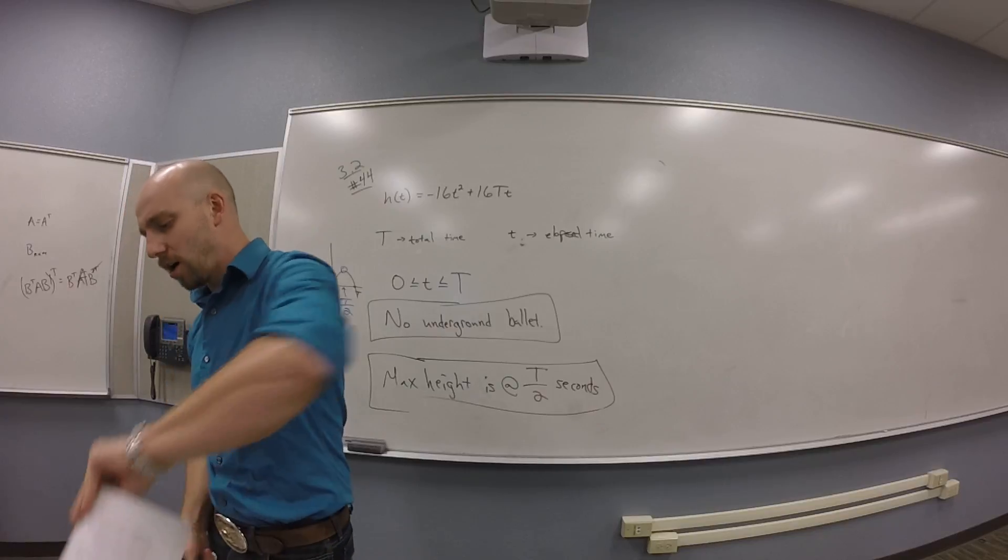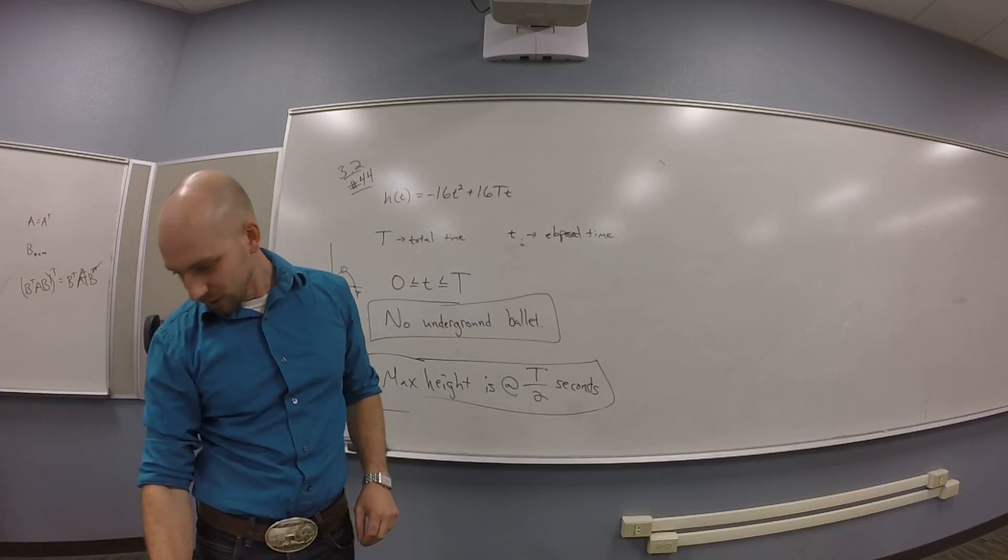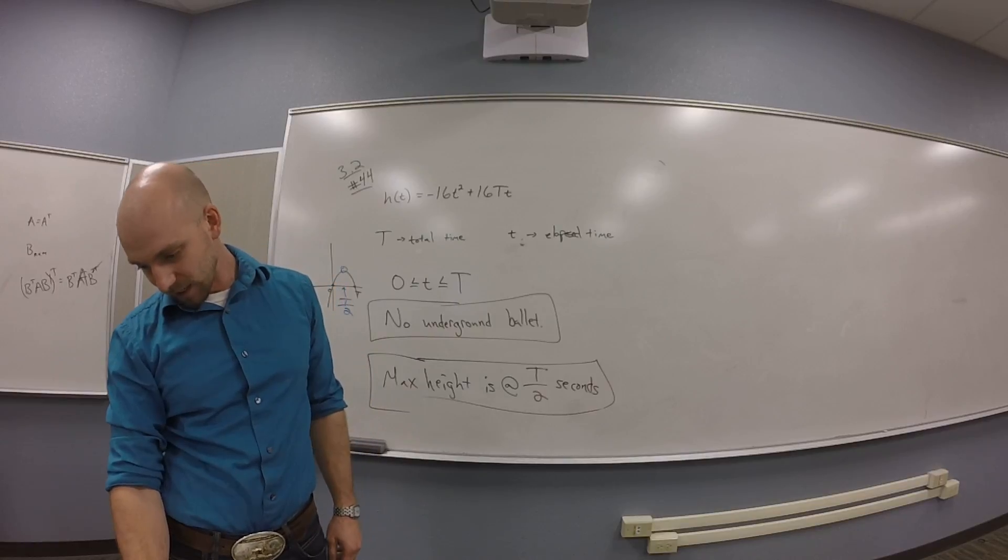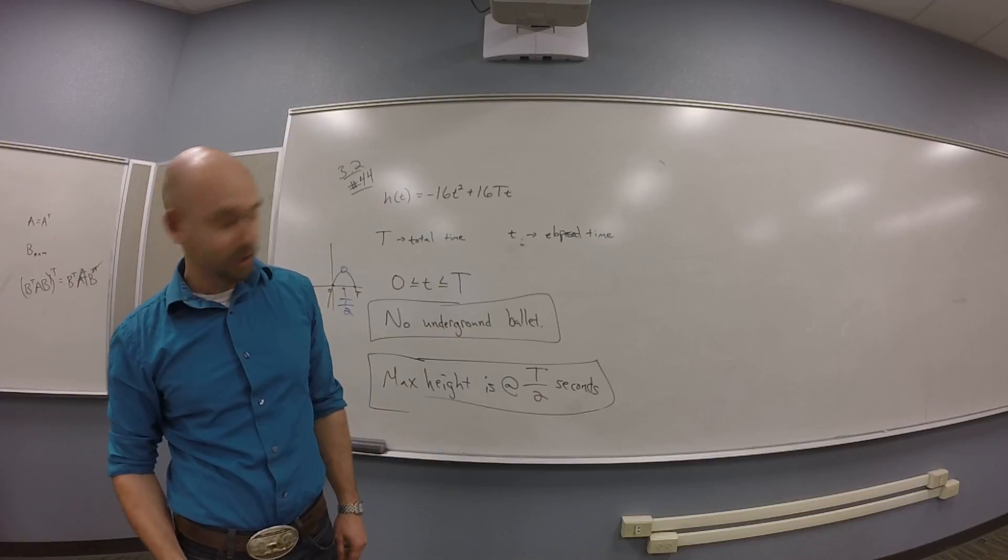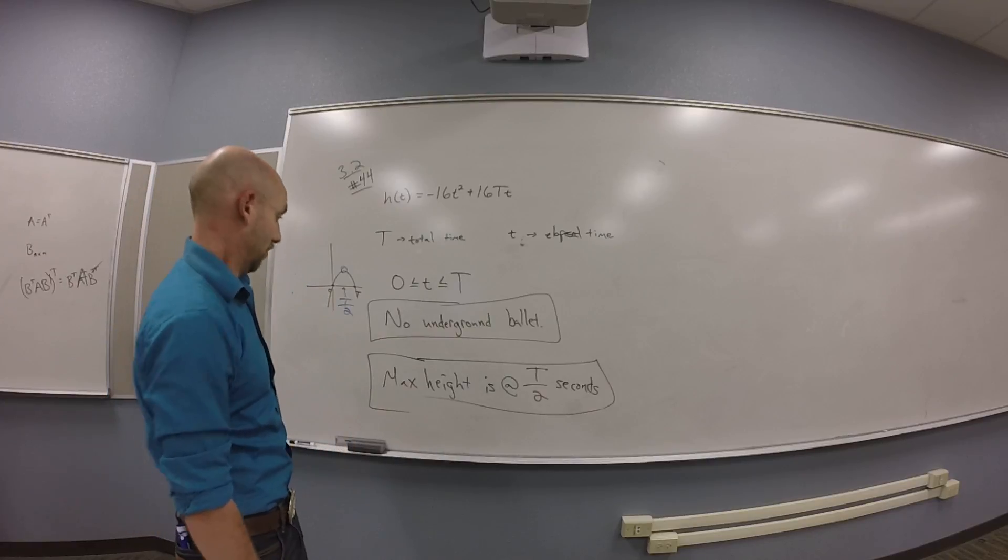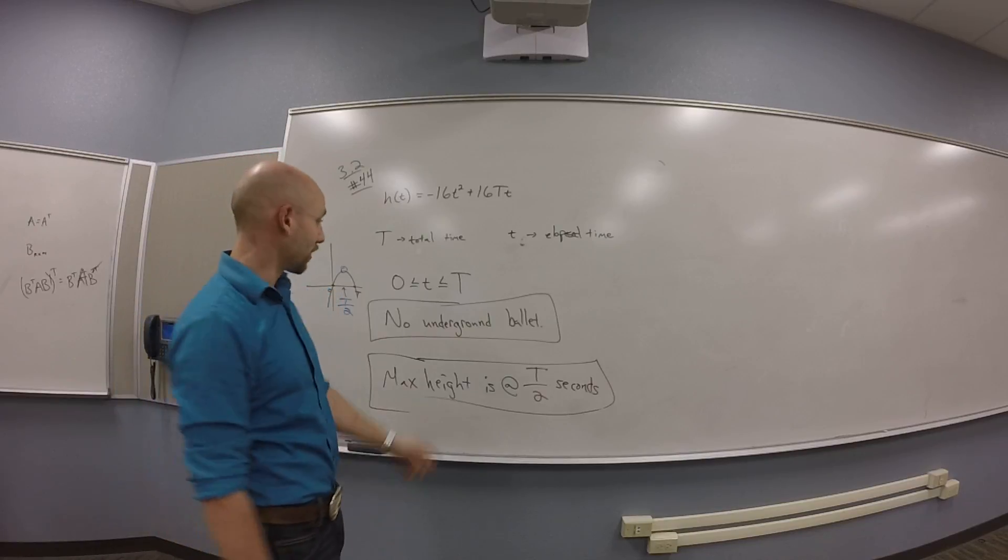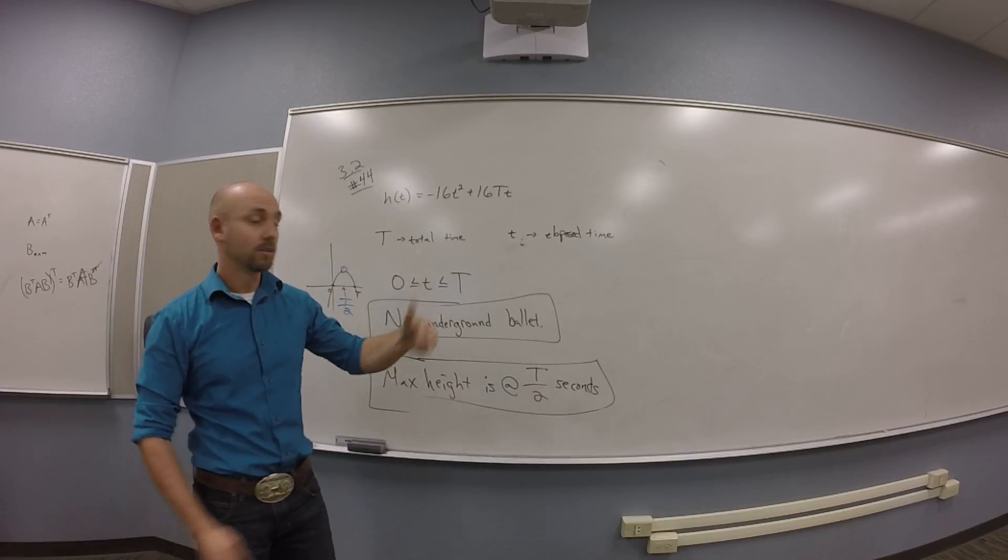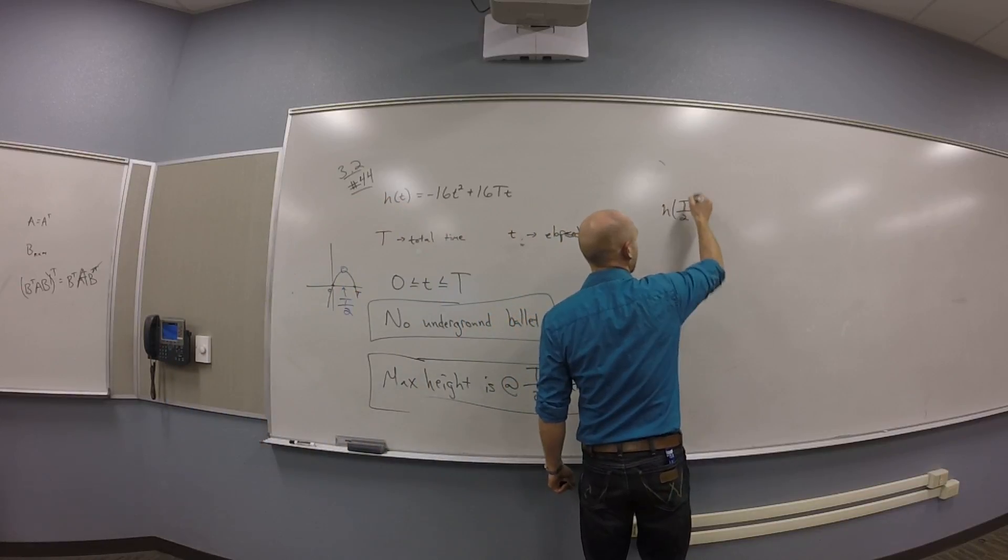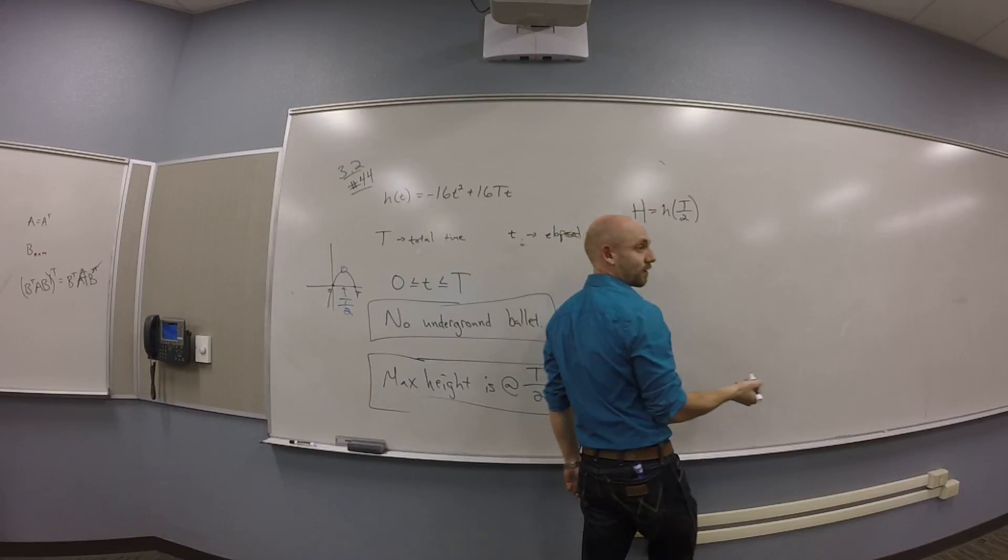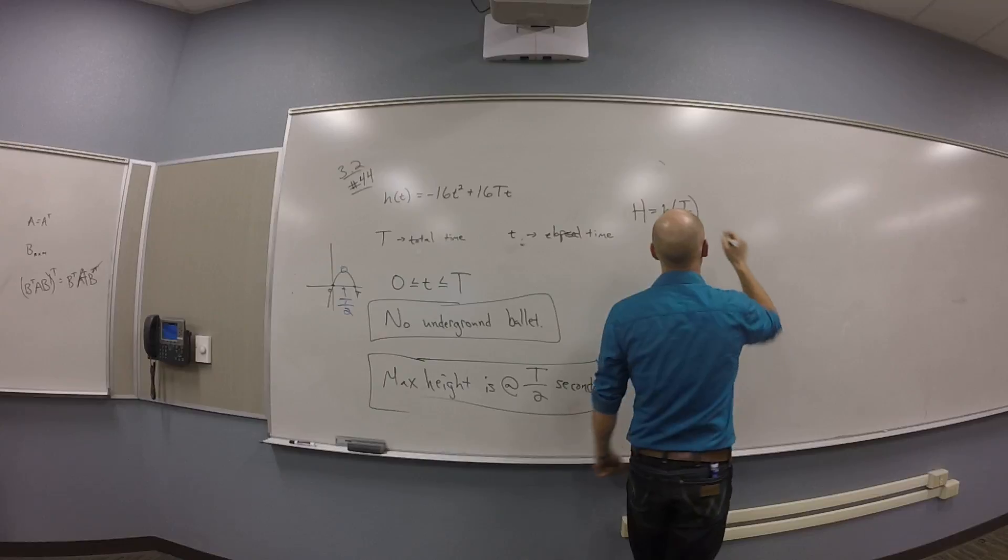There's a c on the other page. Show that the time T that the dancers in the air is related to h, the maximum height of the jump by the equation something. So I guess they do want me to go plug that thing in. Let me go find h of capital T over 2. This is going to be capital H, that maximum height.